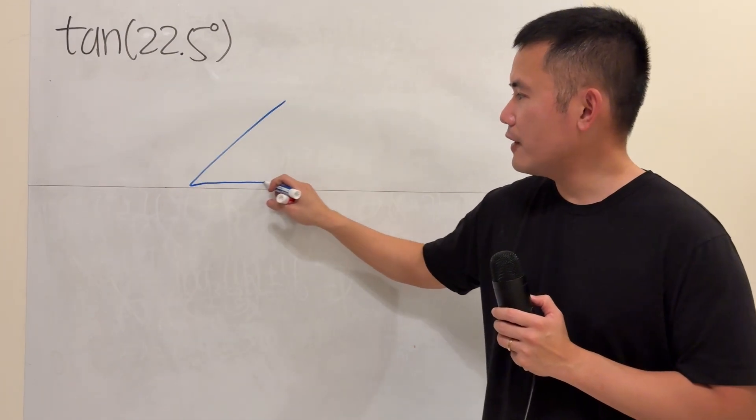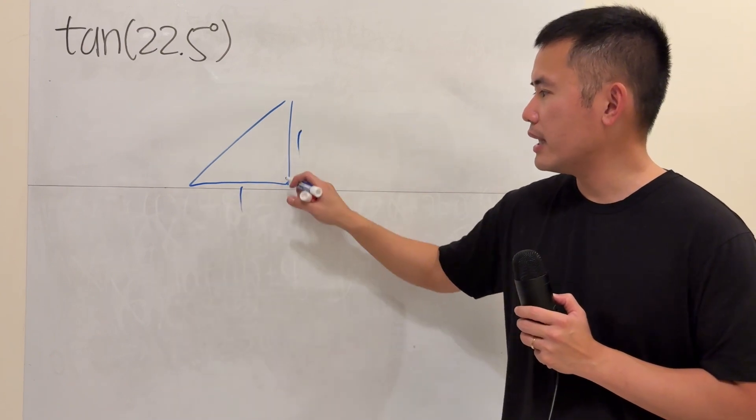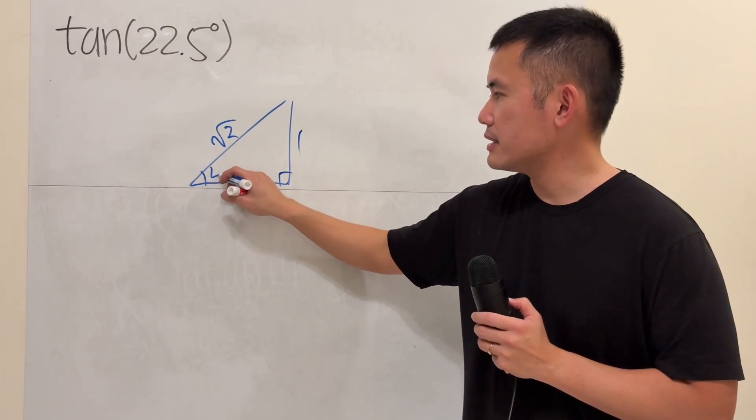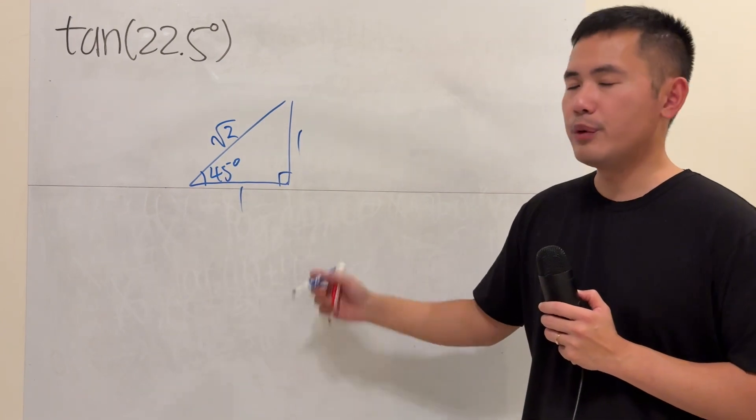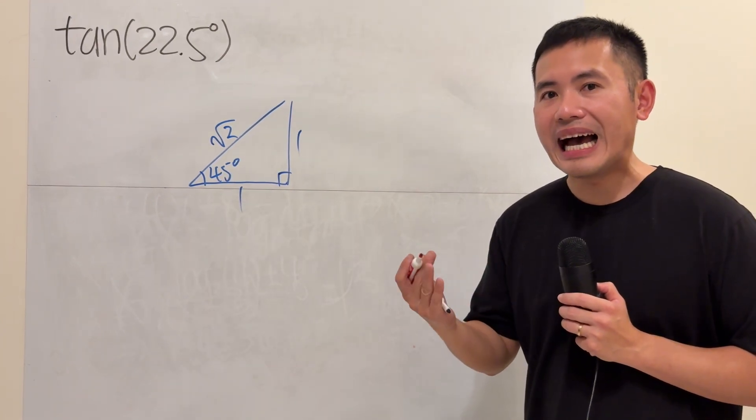Start with the 45-45-90 special right triangle, which we know we have 1-1 and square root of 2, and that is 45 degrees. Very nice, right? Now, this is how we are going to get the half-angle.